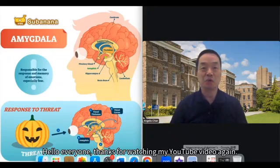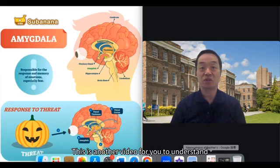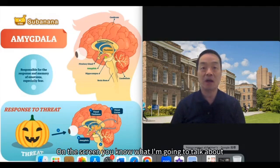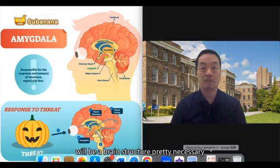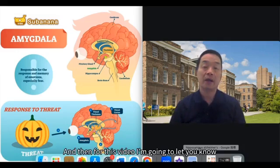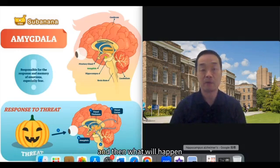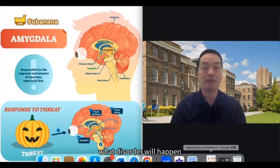Hello everyone. Thank you for watching my YouTube video again. This is another video for you to understand biological psychology. On the screen, I'm going to talk about a brain structure that's pretty necessary for everyone to know about emotion. For this video, I'm going to let you know what functions the amygdala actually has, and what disorders will happen if you have amygdala dysfunction.